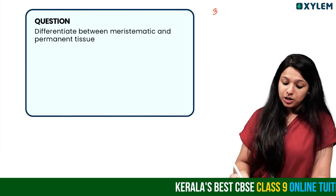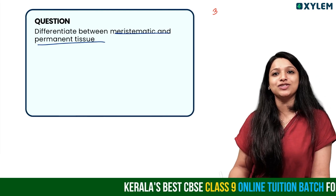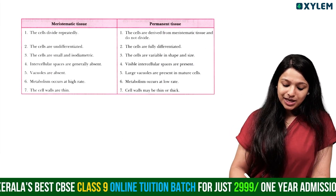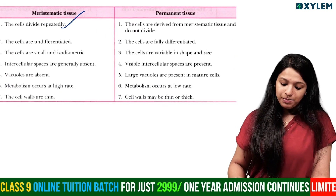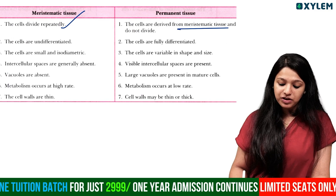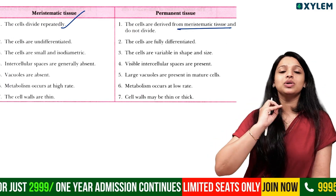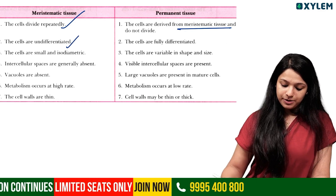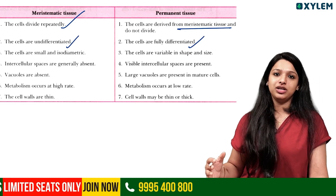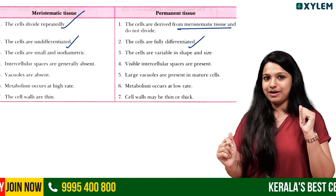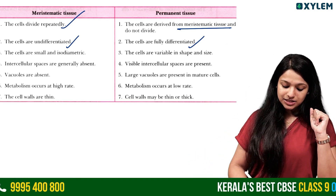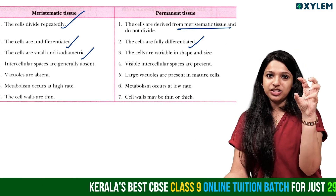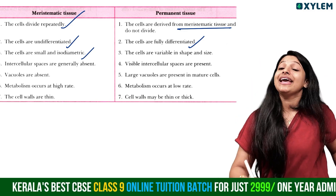Next question: differentiate between meristematic and permanent tissue — a 3-mark table question. Meristematic tissues are actively dividing; permanent tissues are derived from meristematic tissue and do not divide. Meristematic cells are undifferentiated; permanent tissues are fully differentiated. Meristematic cells are small and isodiametric.